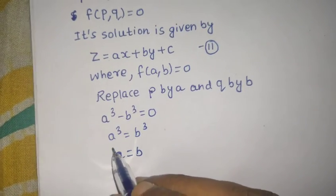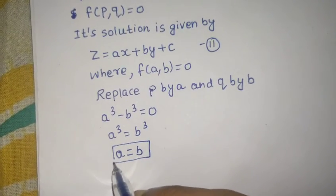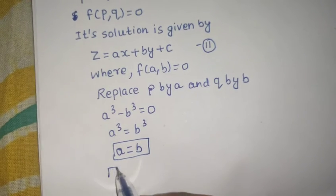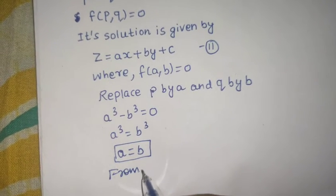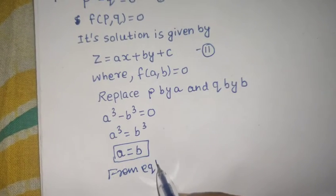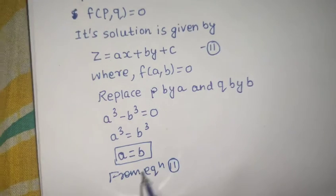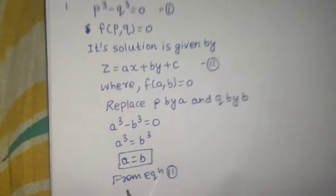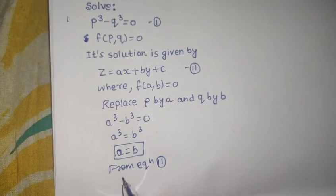Now, from equation number 2, Z = AX + BY + C.